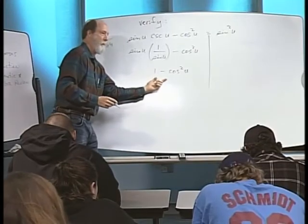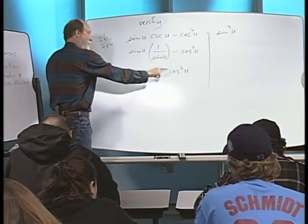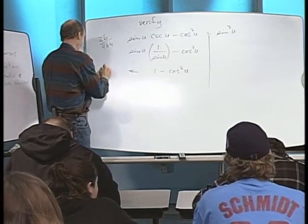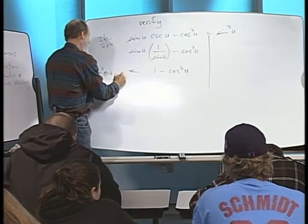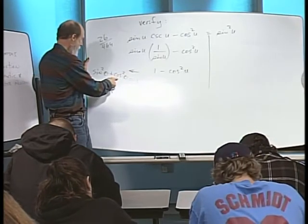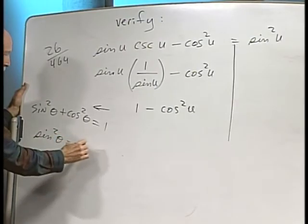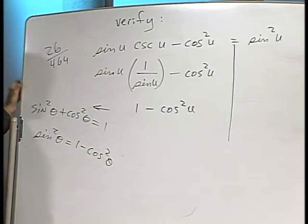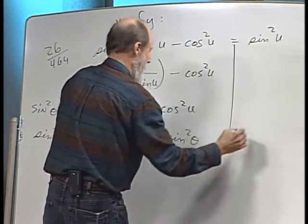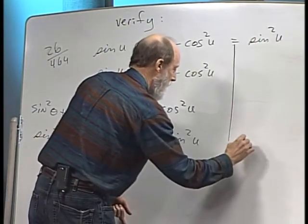Now you need to remember something else. What do you remember that might help us with this? Pythagorean theorem, right? You know that sine squared of an angle plus cosine squared of an angle is equal to 1. Well, look at that. If you subtract cosine squared of theta from both sides, don't you get sine squared of theta happens to be 1 minus the cosine squared of the angle? So this gets replaced by sine squared u, and you can see over here that that matches this side.